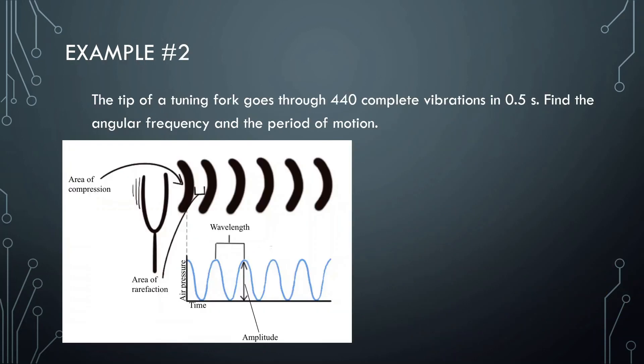Let's look at the next example. The tip of a tuning fork goes through 440 complete vibrations in 0.5 seconds. Find the angular frequency and the period of the motion. So what we know is it's going to make 440 vibrations in a time of 0.5 seconds. So in 0.5 seconds it's going to be doing all this. There's a few ways we can do this, but what I want to think about is in one second it's going to be going through 880 vibrations. So what this is telling us is that the frequency is 880, that is the frequency, 880 hertz.